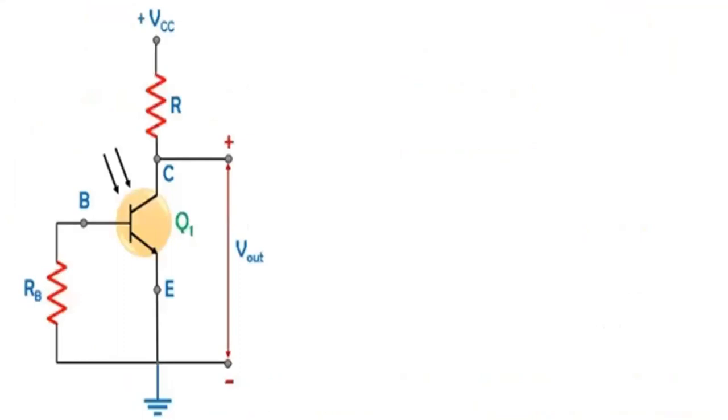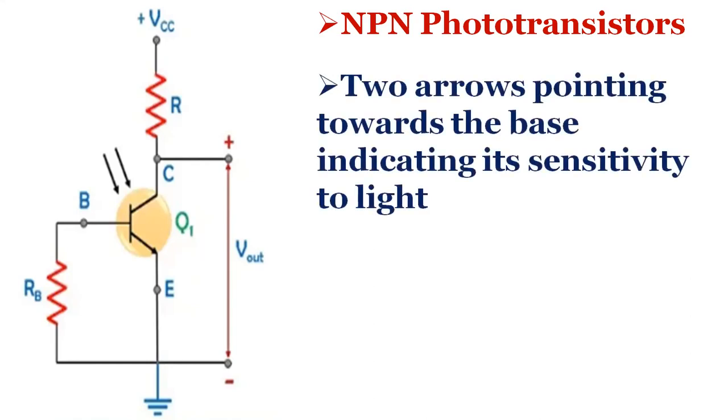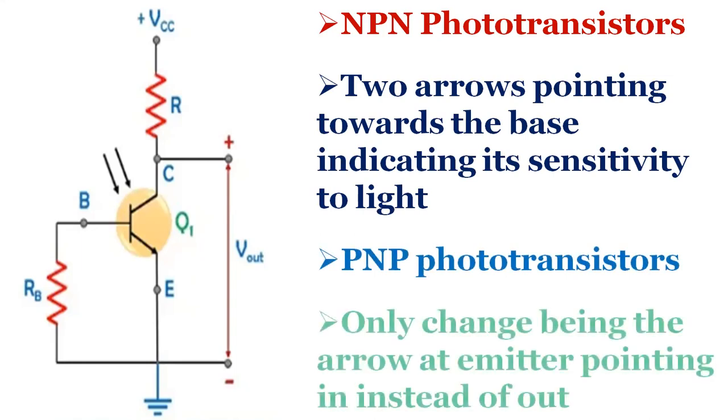The circuit symbol for NPN phototransistor is shown here, which is nothing but a transistor with or without base lead with two arrows pointing towards the base, indicating its sensitivity to light. Similar symbolic representation holds well even in the case of PNP phototransistors, with the only change being the arrow at emitter pointing inside instead of out.